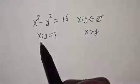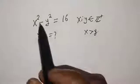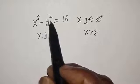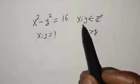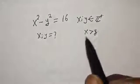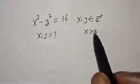Hello, welcome to Magist. In this class, we want to find the value of x and y from this equation: x squared minus y squared is equal to 16, where x and y are members of the positive integers and x is greater than y.